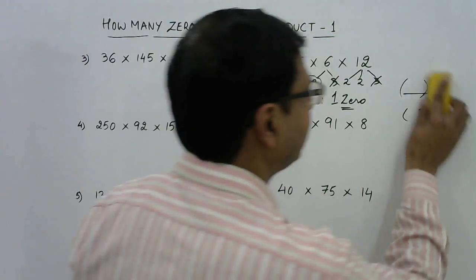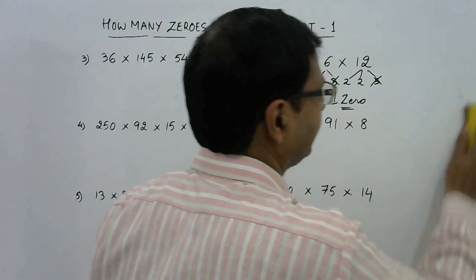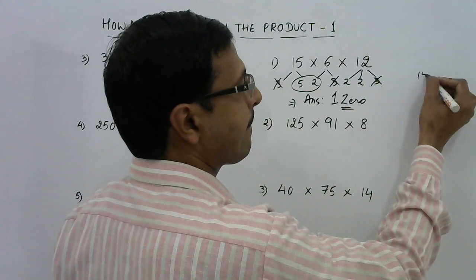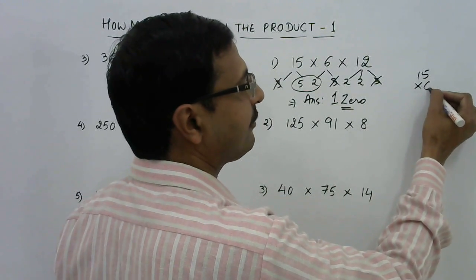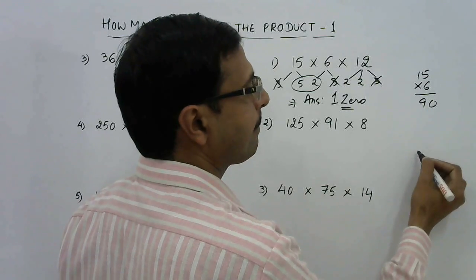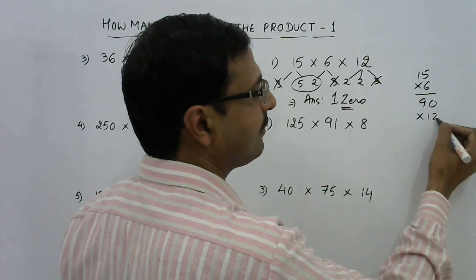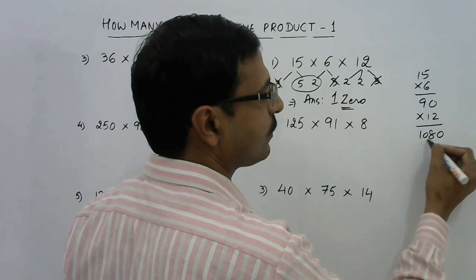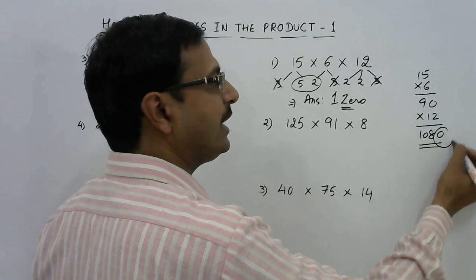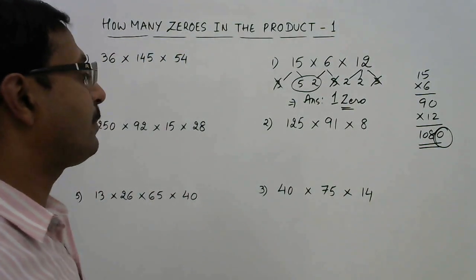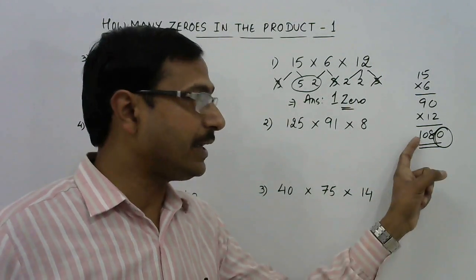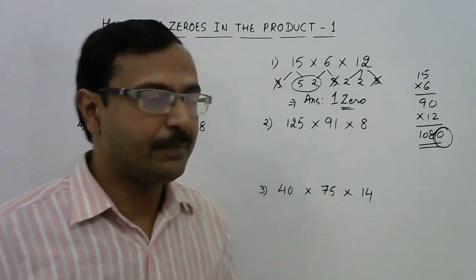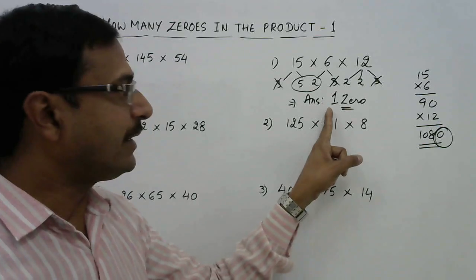Let us verify this. We have 15, 6, and 12. If you multiply 15 × 6 = 90, and 90 × 12 = 1080. How many zeros are at the end of the product? There is only one zero at the end — and that's exactly what we found without multiplying all three numbers.